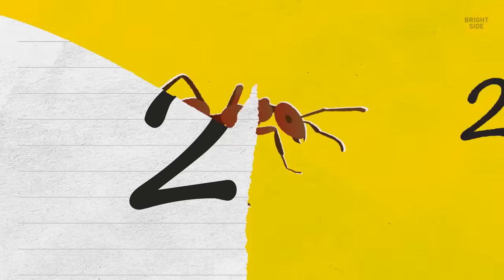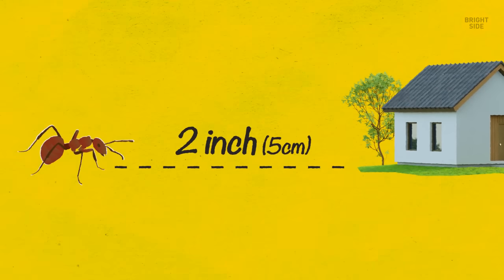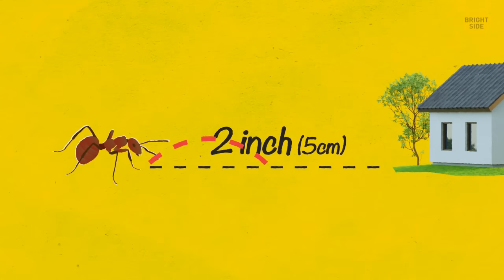An ant is two inches away from its home. With every next step, the insect covers half the distance to the entrance. How many steps will it take for the insect to reach its destination? The ant will never reach the door because every time, it'll travel only half the distance.